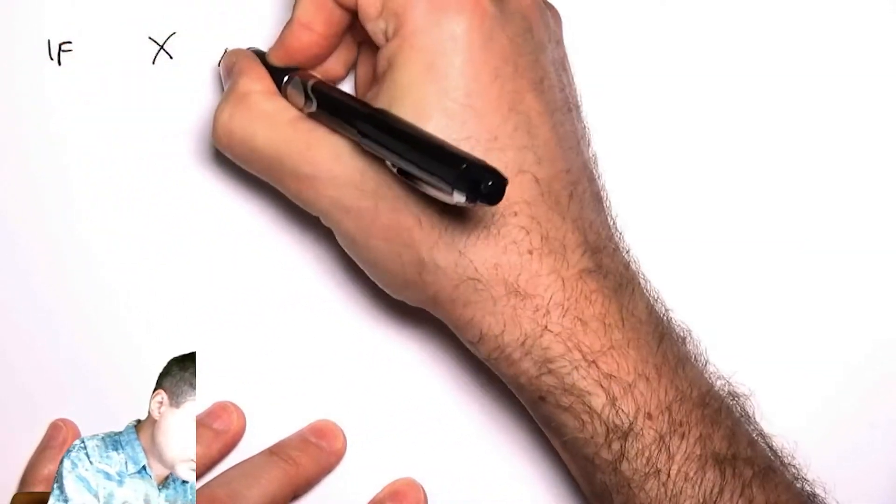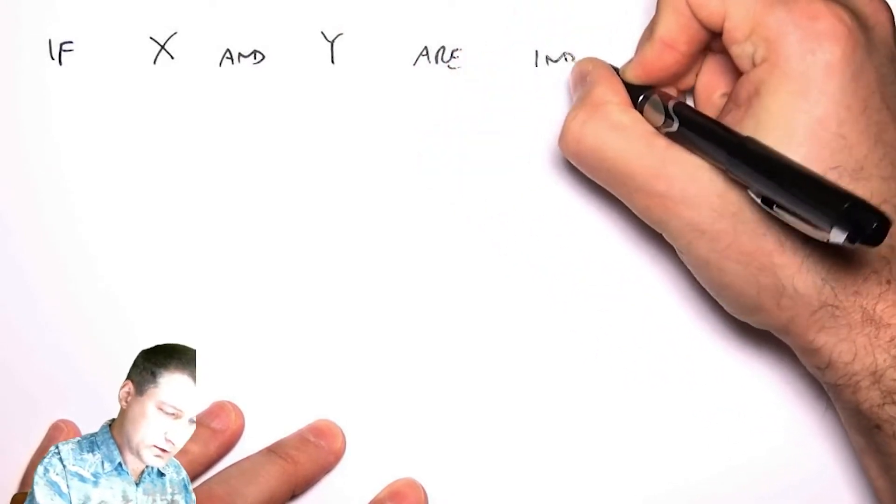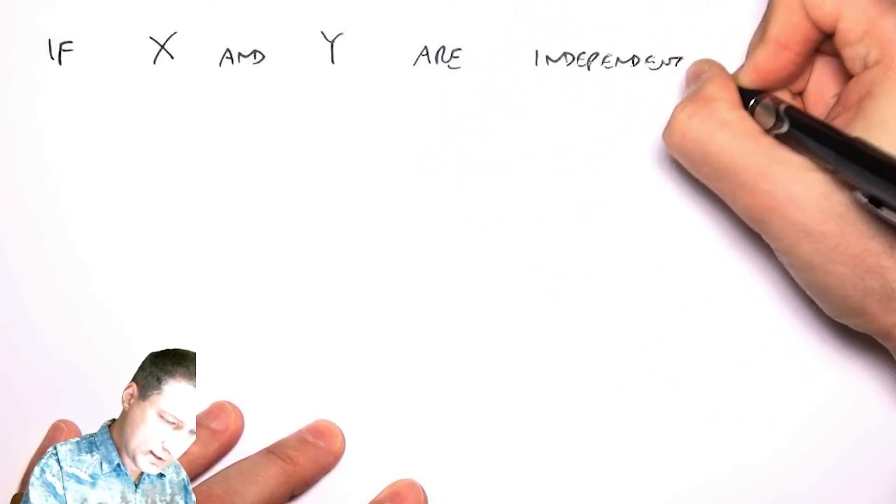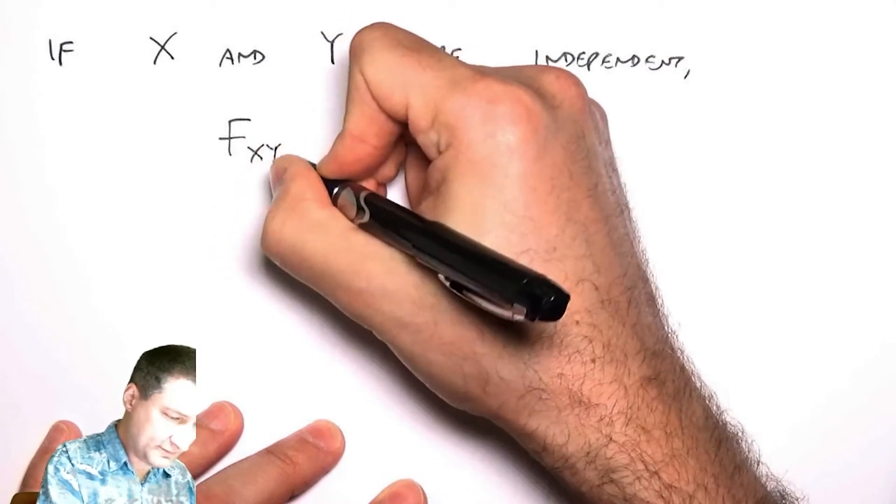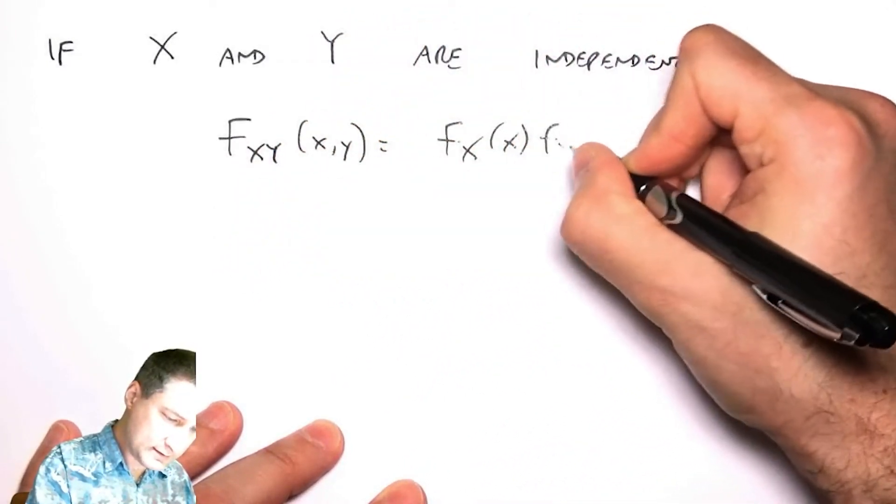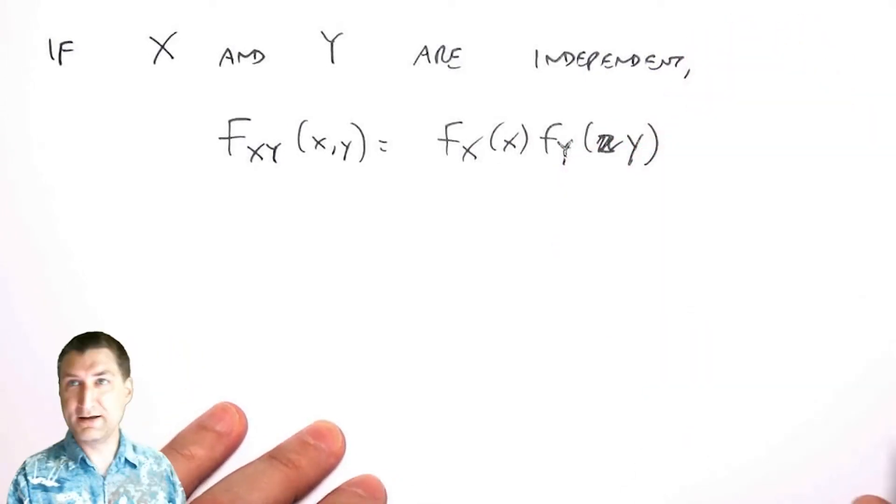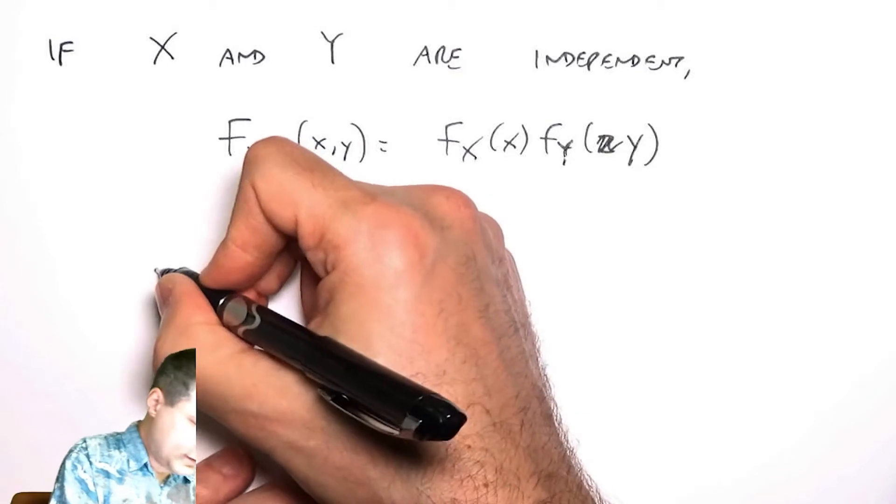If X and Y are independent, remember what that means is that the joint PDF is the product of the individual PDFs.